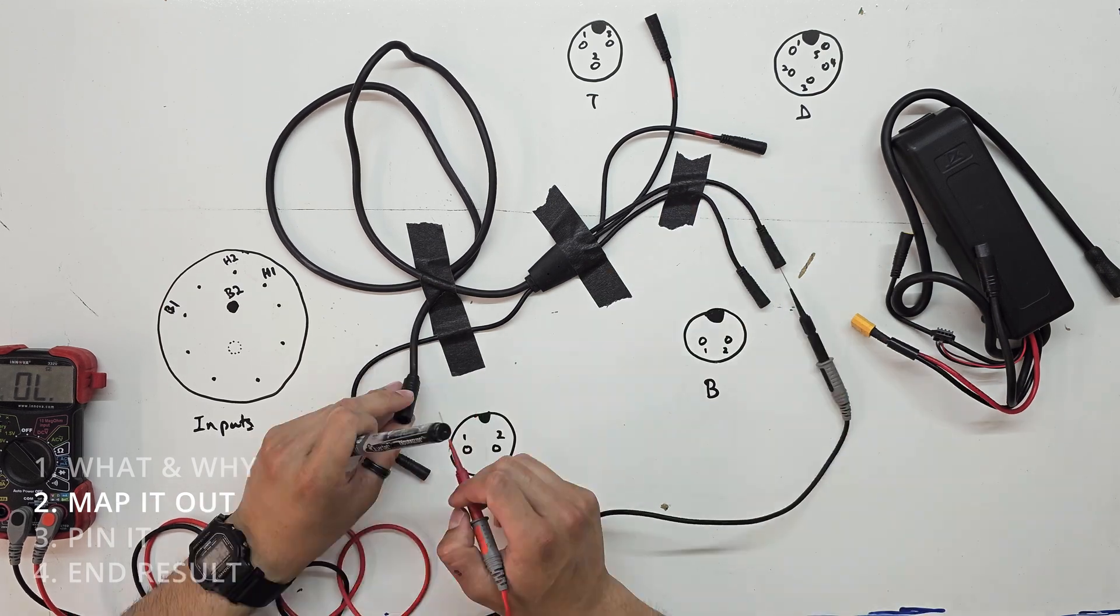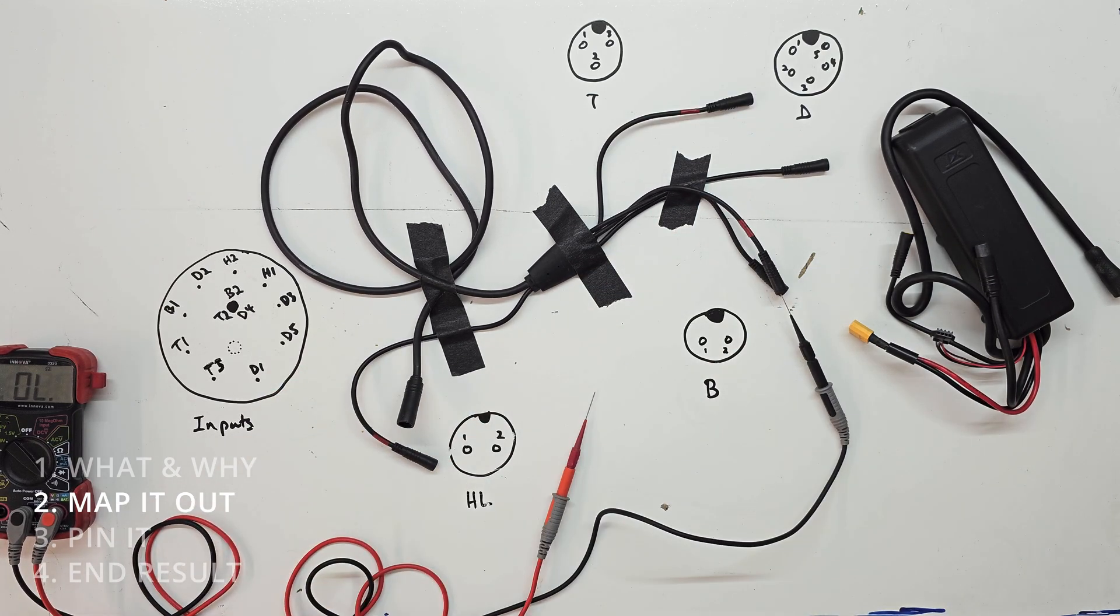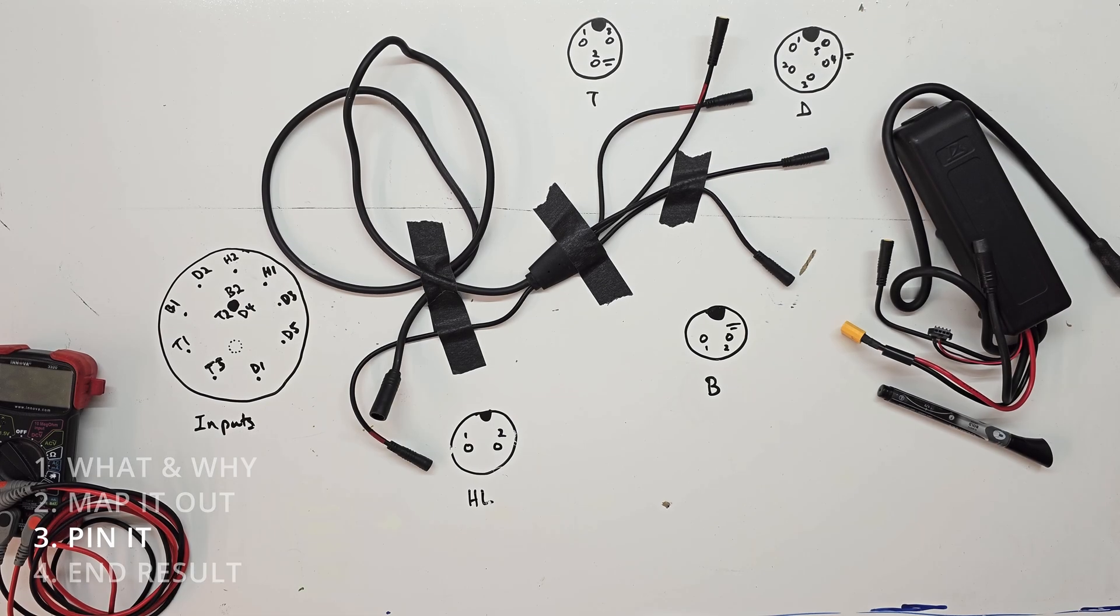What we're first going to do is check continuity to identify which pins lead where. So that's step one of creating a map of the harness.